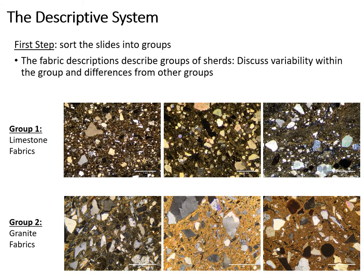The first step in the descriptive system is to group similar thin sections together. For example, this slide groups all sherds that contain limestone into one group and all sherds that contain granite into a second group. There are clearly differences within each group, but the sherds within a group are more similar to one another than to sherds in the other group. Dividing the sherds into groups based on composition of the inclusions provides a starting point to understanding provenance. The analyst then further divides the larger groups if necessary, which allows for a consideration of variability within each group, due to human behavior or natural variations in the clays.